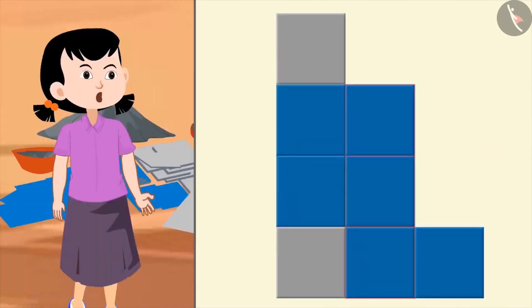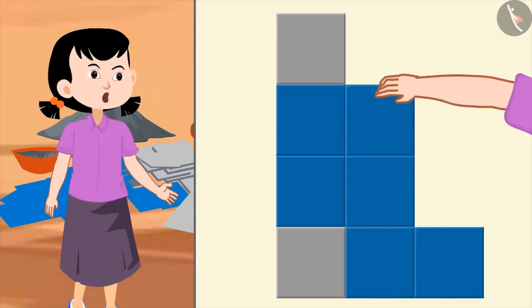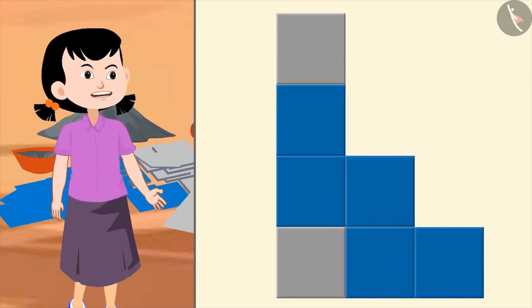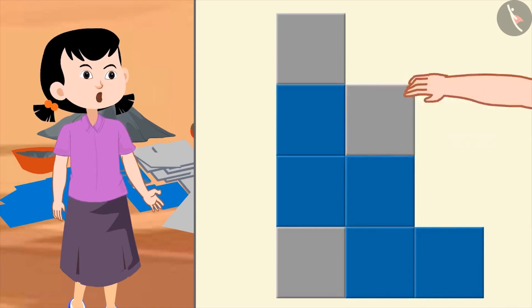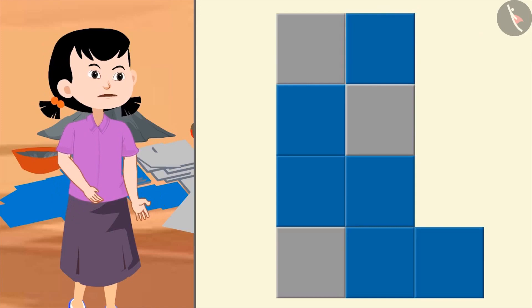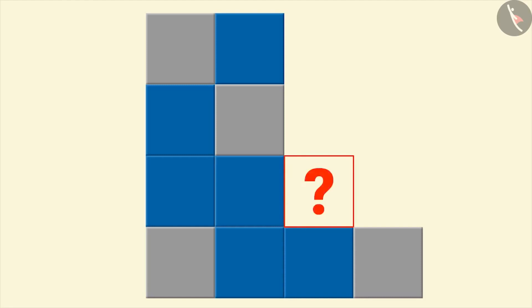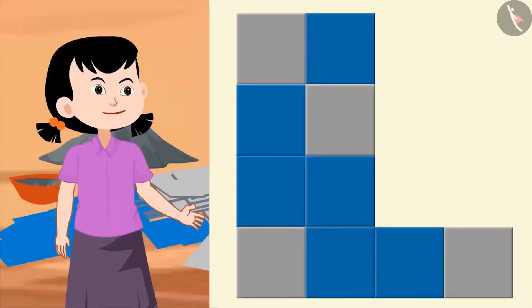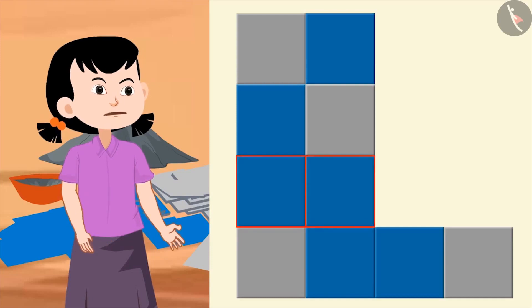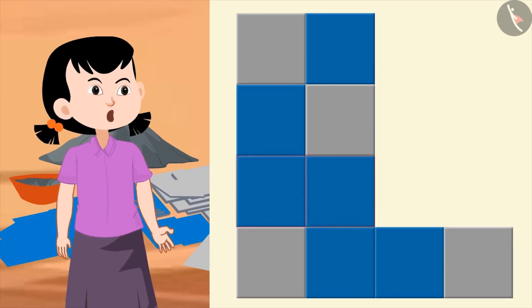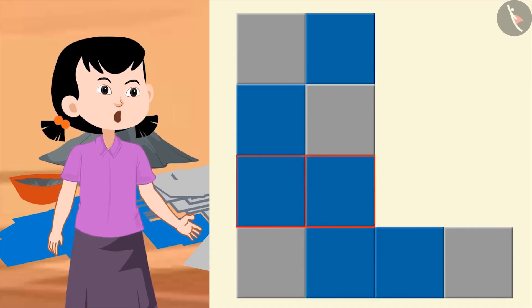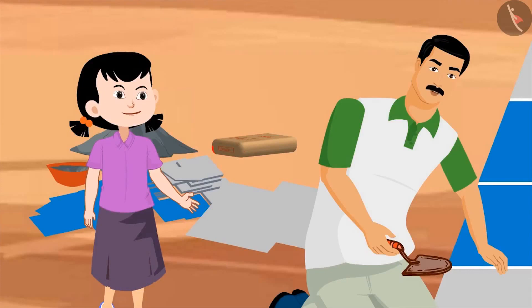No, uncle. This will give three blue tiles together. Here we will place one blue, then one grey, and then two blue tiles. Absolutely correct. Now, what colour of tile should we place here? Uncle, see, in this line, we have already placed two blue tiles. That's why we will use a grey tile now. Wow, Gauri, you have become so intelligent. Come, let's finish this pattern by placing the tiles.